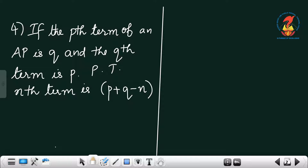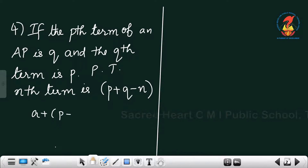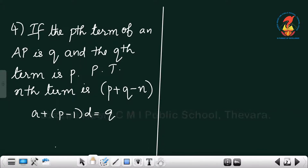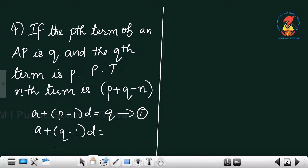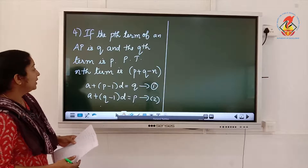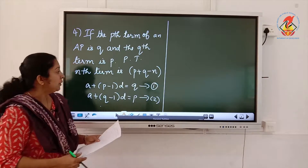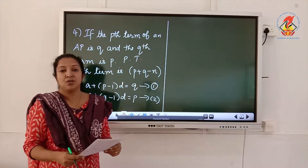Question 4: If the pth term of an AP is q and the qth term is p, prove that the nth term is p plus q minus n. The pth term means a plus (p minus 1) into d equals q — this is the first equation. The qth term: a plus (q minus 1) into d equals p — this is the second equation. We have to prove that the nth term is p plus q minus n.